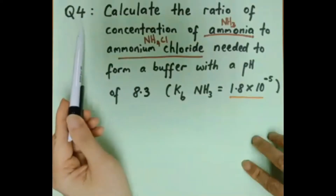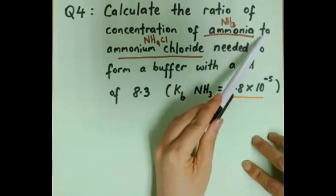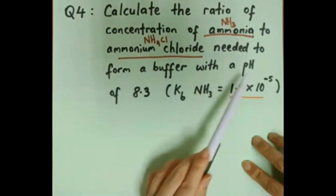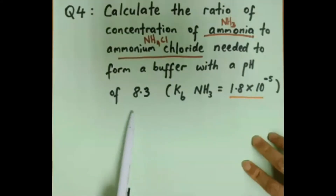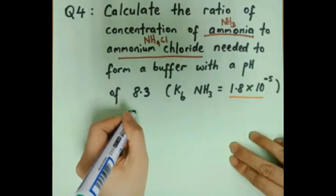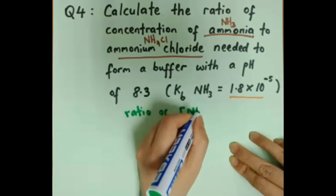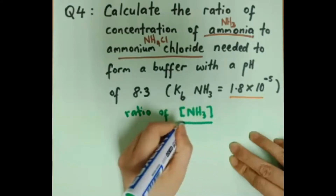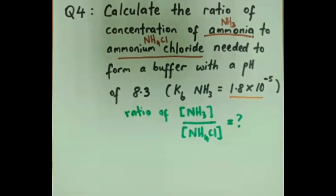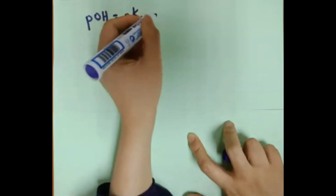Question 4: calculate the ratio of concentration of ammonia to ammonium chloride needed to form a buffer solution with a pH of 8.3. The question asks for the ratio of NH3 to NH4Cl, and the Kb value is given.